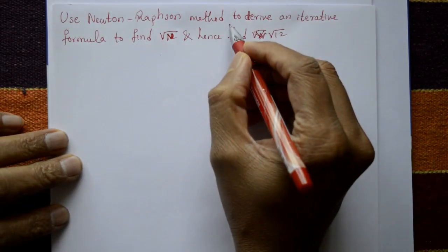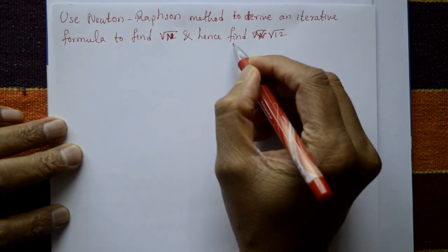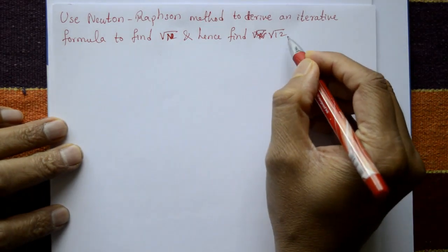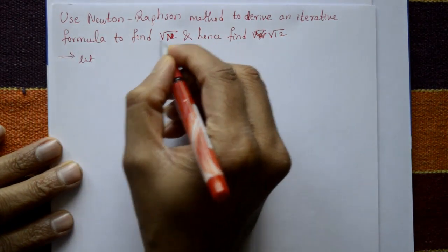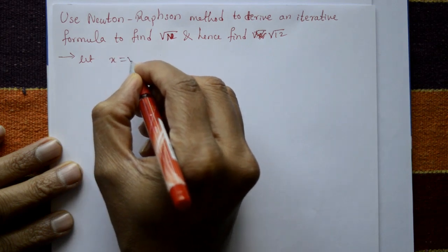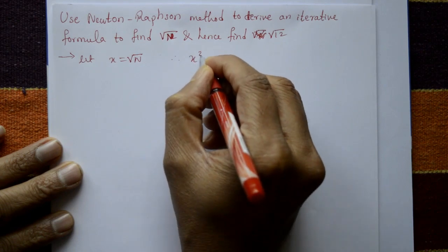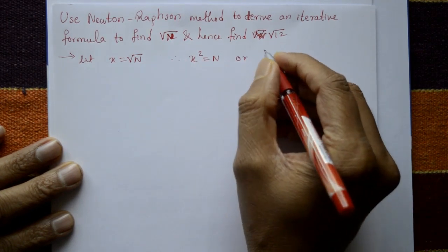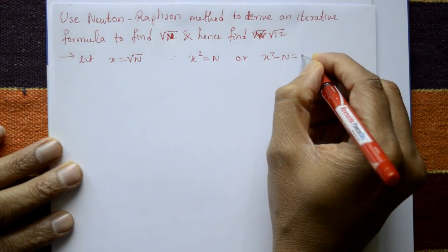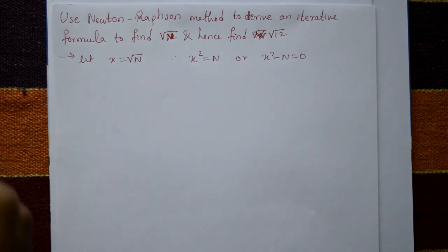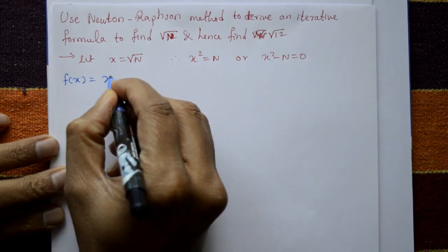Use Newton-Raphson method to derive an iterative formula to find root n, and hence find root 12. Solution: let x = √n. Squaring both sides, x² = n, or x² - n = 0. This gives us f(x) = x² - n.